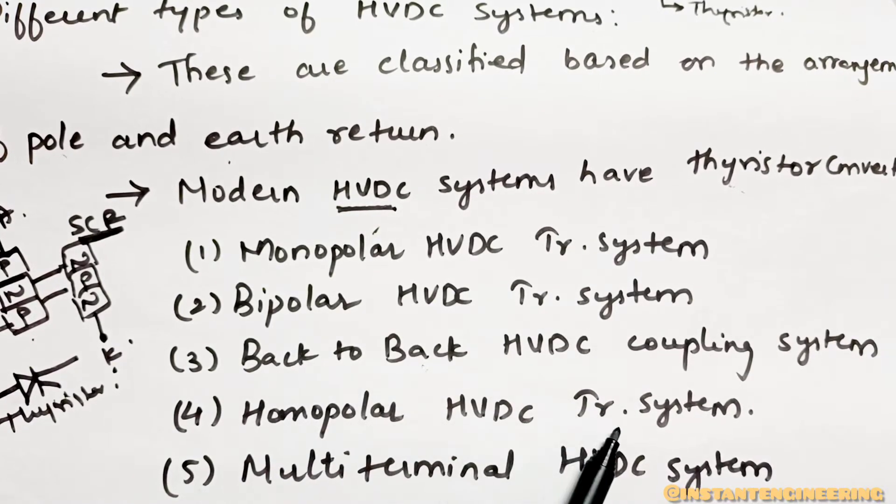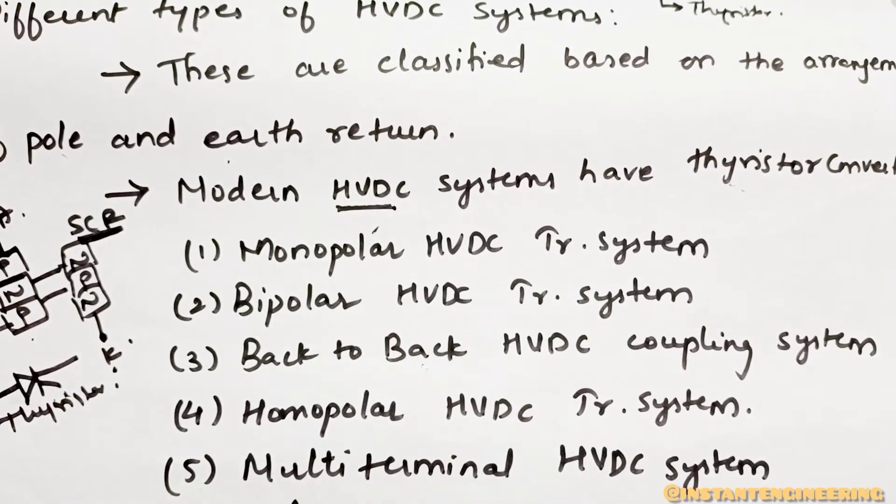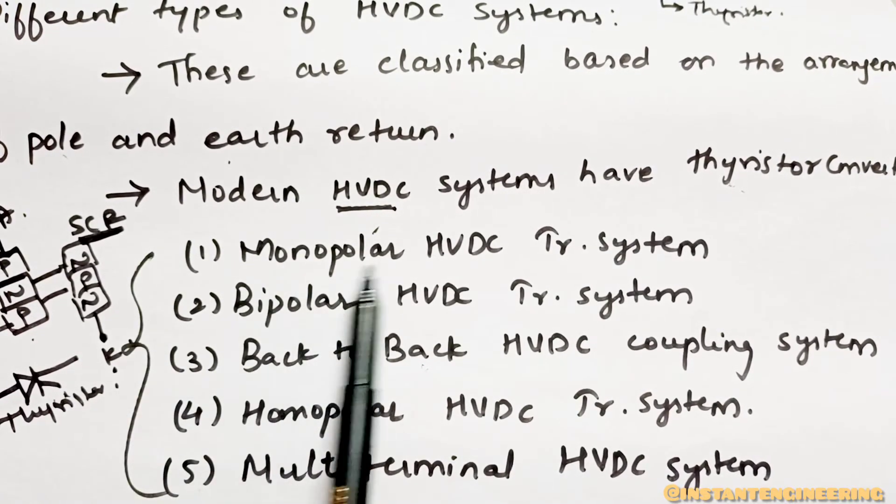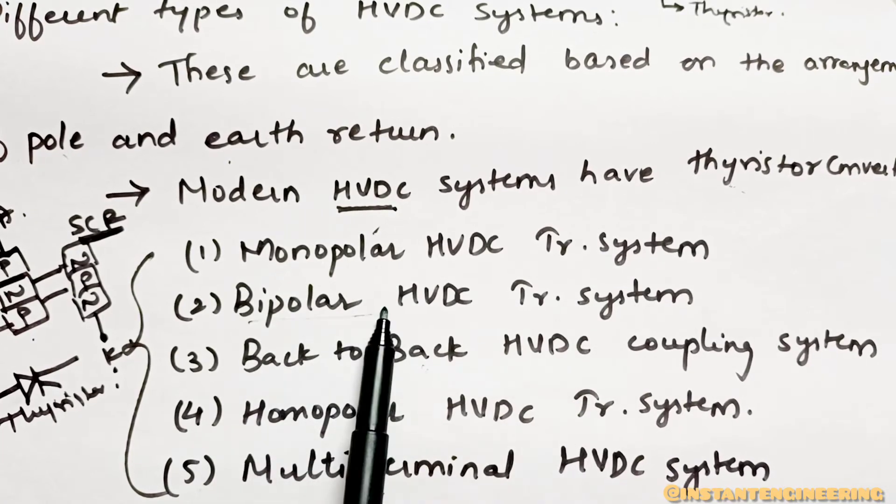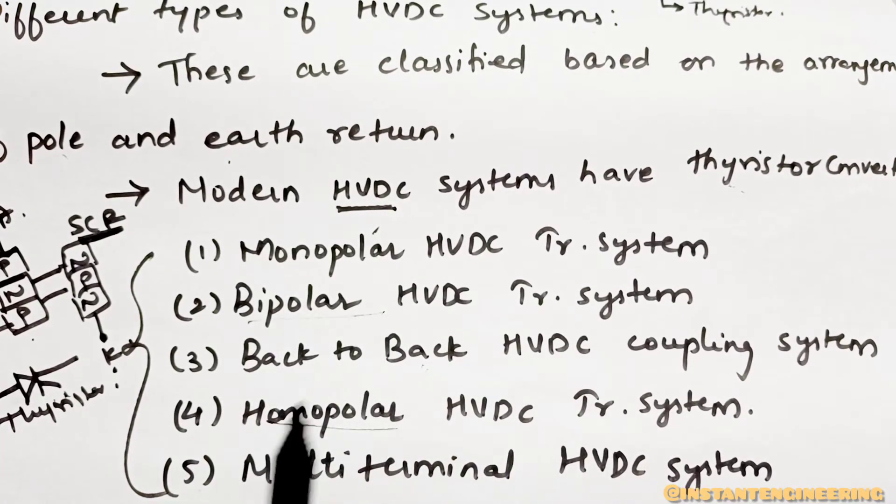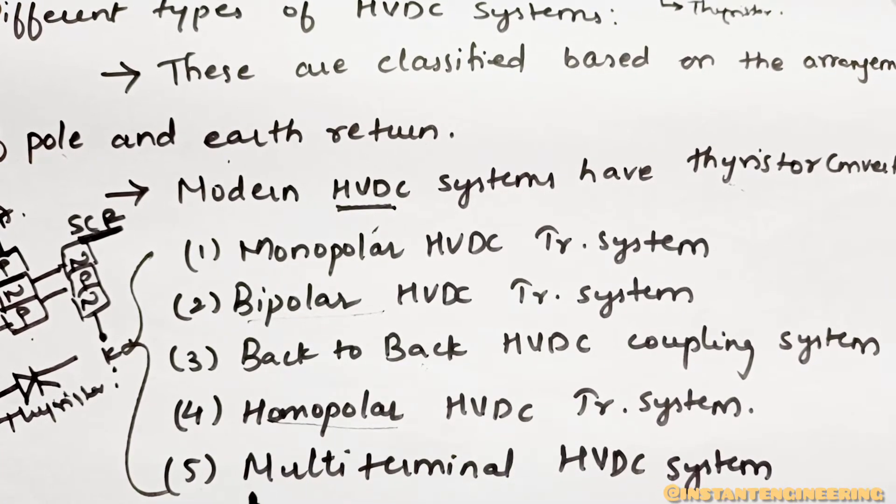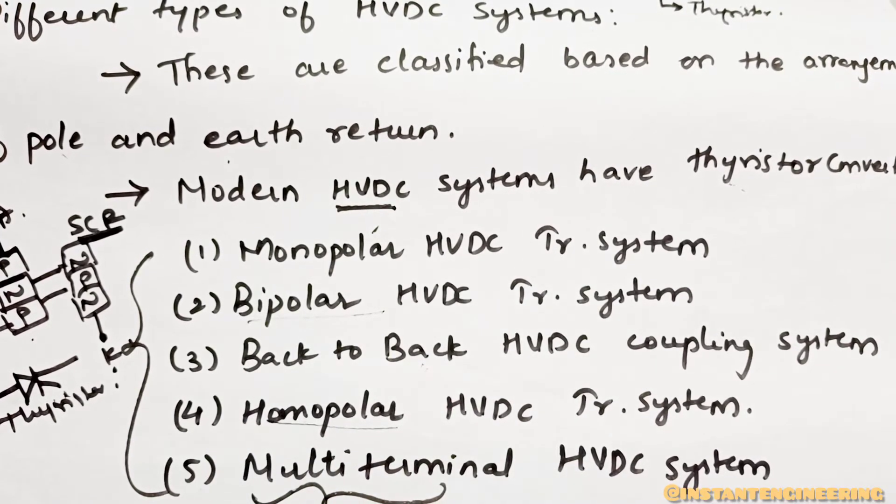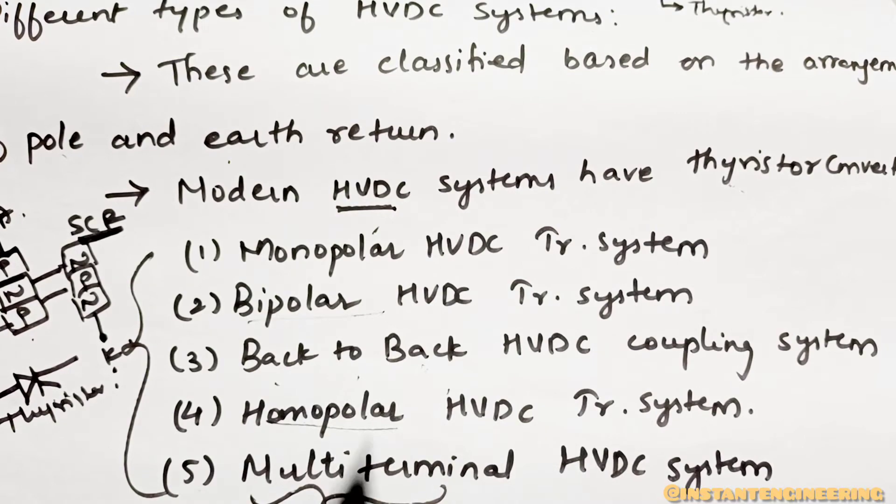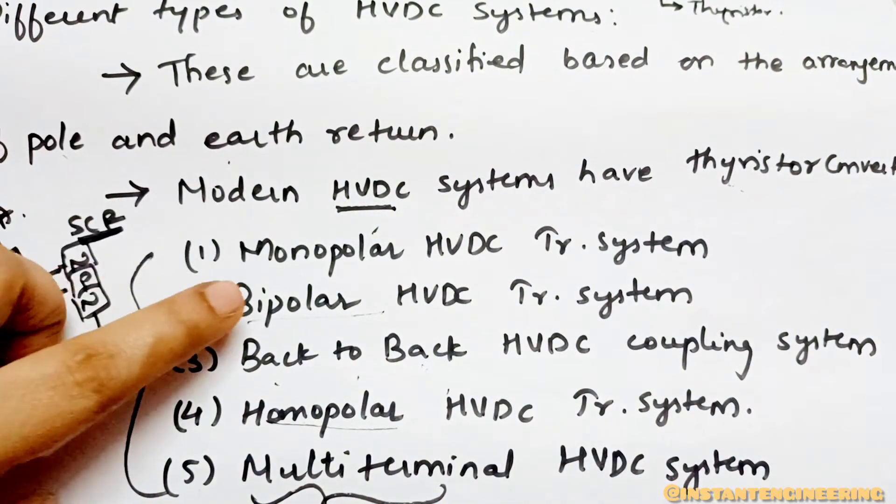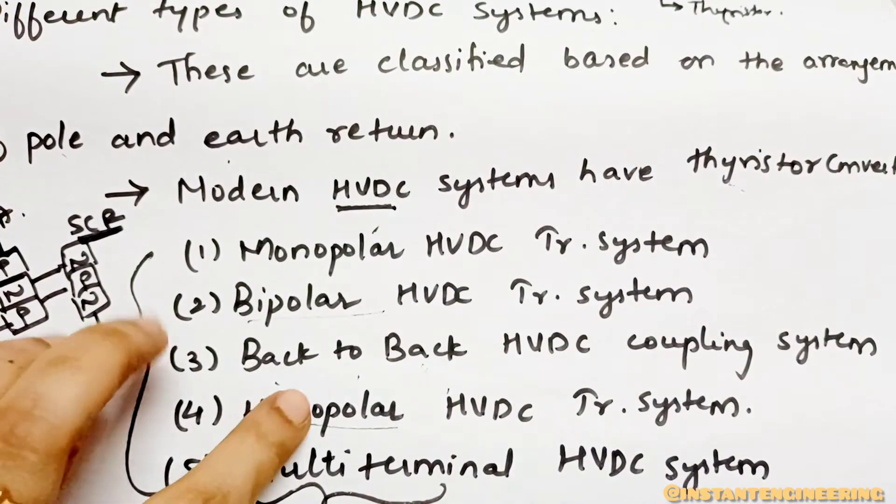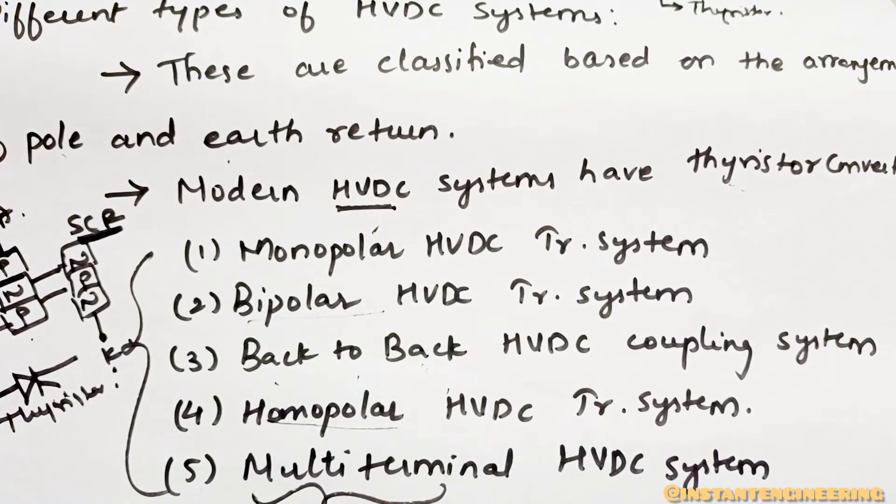Another is homopolar HVDC transmission system. Next is multi-terminal HVDC system. You have to remember this: mono, bipolar, homopolar, multi-terminal, and back-to-back. I'm just telling you how to remember. Mono one, bipolar two, homo means self, multi means multi, back-to-back HVDC. This clear?